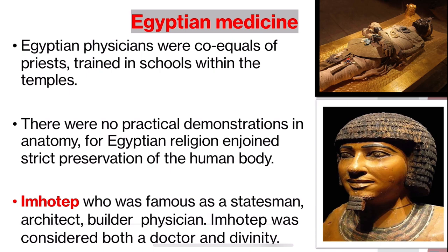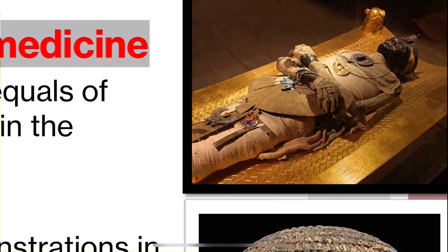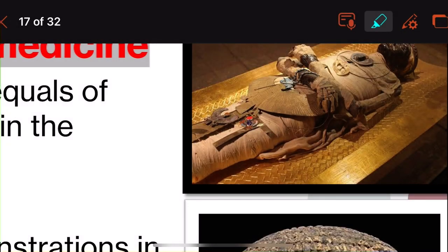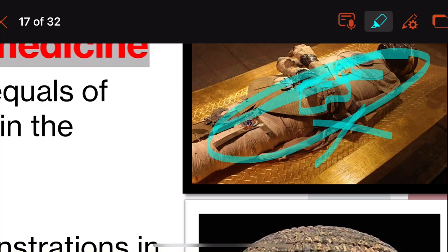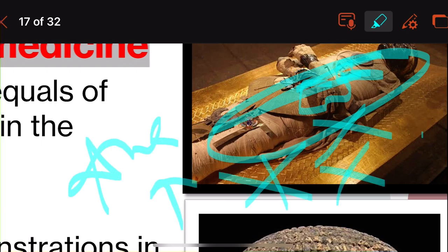Moving on to Egyptian medicine. In Egypt, medicine was completely intermingled with religion. Physicians were considered equal to priests, residing in temples and trained in schools within the temples. No practical demonstrations in anatomy were done in the Egyptian period. The Egyptian religion believed in the strict preservation of the human body, which was the main cause for the decline of this medicine — no dissection was performed, so the science did not develop.